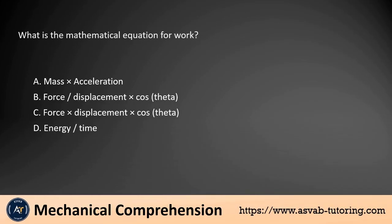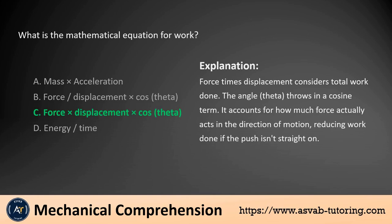What is the mathematical equation for work? A. Mass times acceleration. B. Force divided by displacement times cos theta. C. Force times displacement times cos theta. D. Energy divided by time. The answer is C. Force times displacement considers total distance. The angle theta throws in a cosine term, accounting for how much force actually acts in the direction of motion, reducing work done if the push isn't straight on.